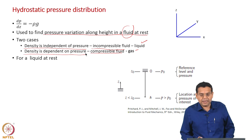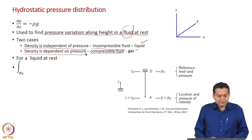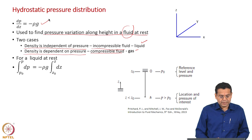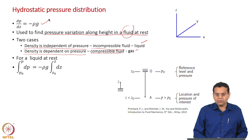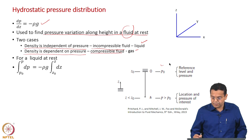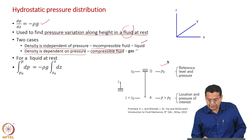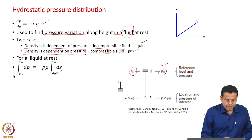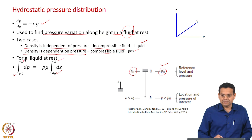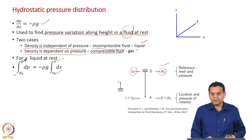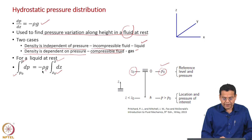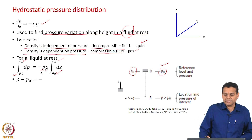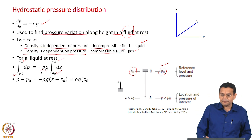For a liquid at rest, we are interested in finding p as a function of z. We integrate the equation dp/dz = -ρg, keeping pressure on the left-hand side and z on the right-hand side. Following the figure from Fox and McDonald, at some datum level z₀ the pressure is p₀, and at some other z we have pressure p. With ρ constant for liquids and g constant, a simple integration gives: p - p₀ = -ρg(z - z₀).